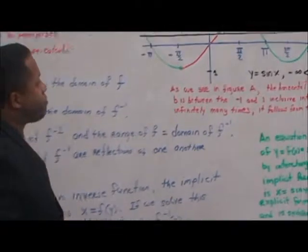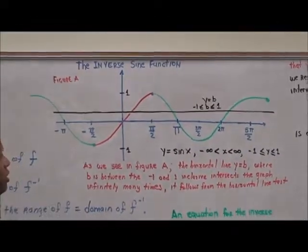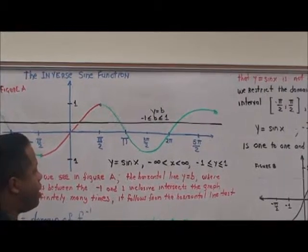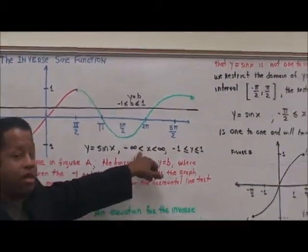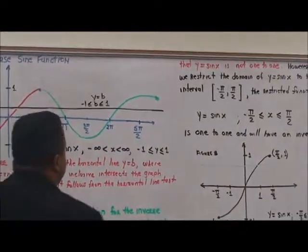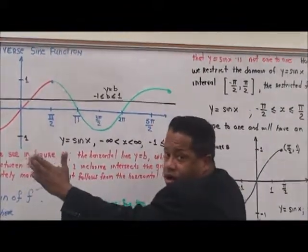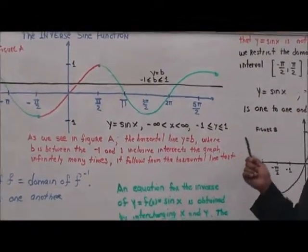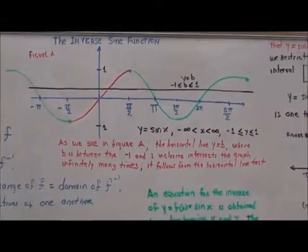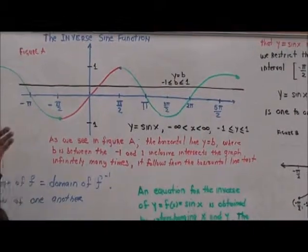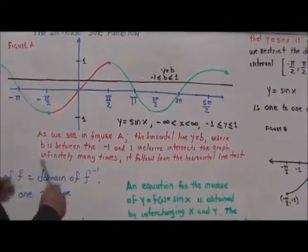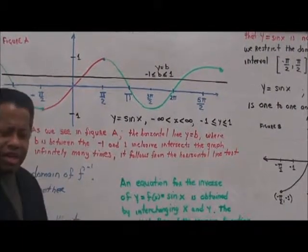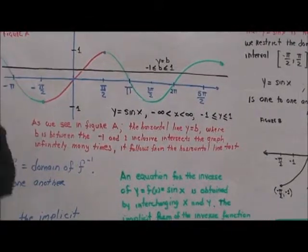Let's look at the graph of the inverse sine function. We see that y equals sine x with a domain from negative infinity to positive infinity, and its range is negative one to positive one. In figure A, a horizontal line y equals b, where b is between negative one and positive one inclusive, intersects the graph infinitely many times.